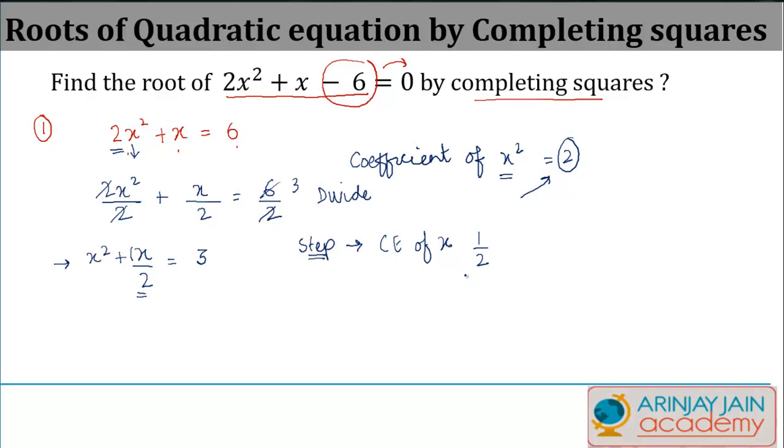Whatever is the coefficient, we take half of it: half of coefficient of x, or in other words, half × coefficient of x. Now incidentally both of them are 1/2 here. What do I get? I get 1/4, and then I square it.